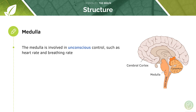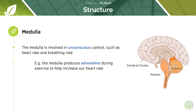The medulla is involved in unconscious control, such as heart rate and breathing rate. You're not consciously controlling these, but they often vary in order to suit the needs of your body. For example, the medulla produces adrenaline during exercise, which helps increase our heart rate so that we can get more oxygen and glucose to our respiring cells and muscles.